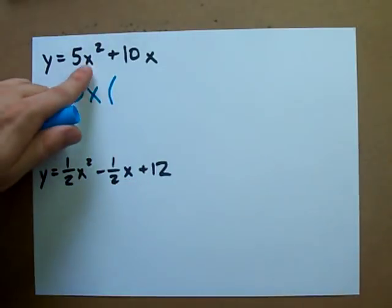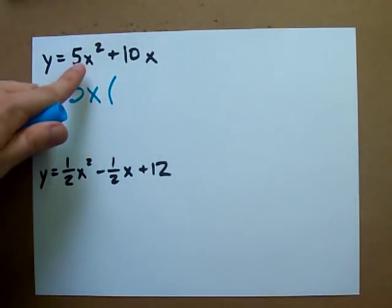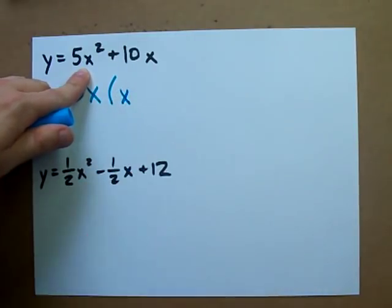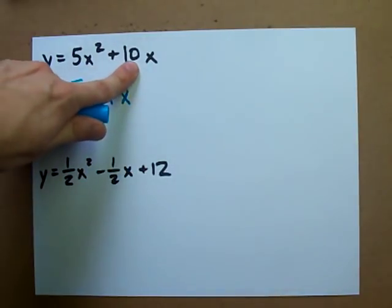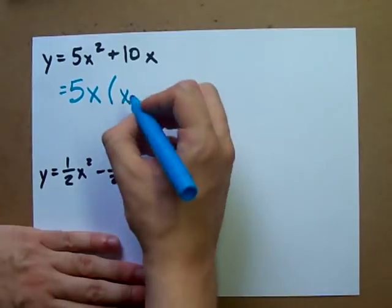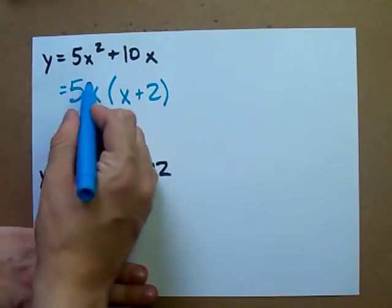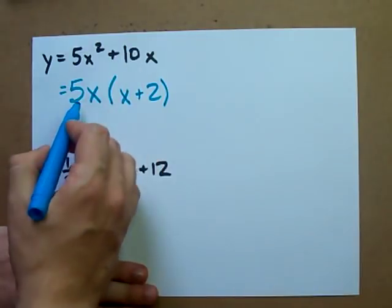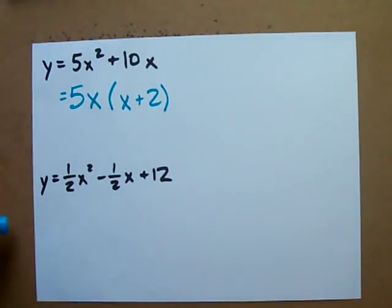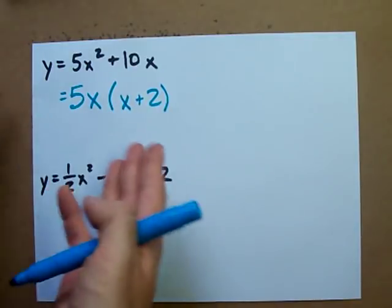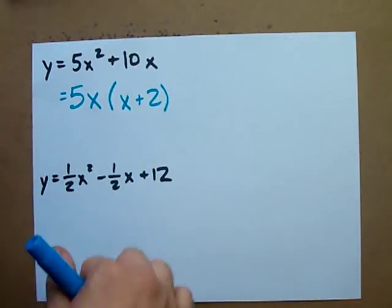When we pull out 5x from this, we're left with just a single x. When we pull 5x out of this, we're left with just 2. We pulled out the x and we pulled out 5 from there. 10 divided by 5 gives us that 2. Oh look, we're already factored because there's no x squared left. That was easy.